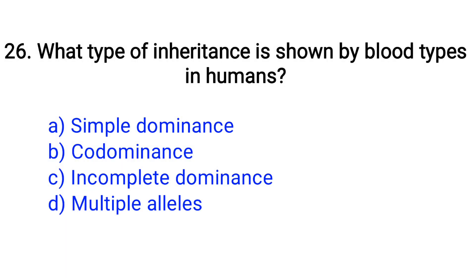Question number 26. What type of inheritance is shown by blood type in humans? Option A: Simple dominance, B: Co-dominance, C: Incomplete dominance, D: Multiple alleles. The right answer is Option D: Multiple alleles.